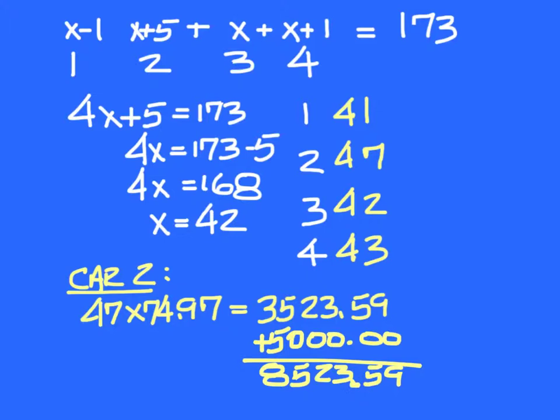We're going to add this up differently than the last two days, so pay attention to what you get a point for. If you have the expression for each one right, one point each, so you could earn 4 points there. If you have x equals 42, you get another point, so that's 5. If you have all of these, those are one point each—41, 47, 42, and 43, the total mileage for each one. That's a point each, so you're up to 9. And if you have this number here at the bottom, 85, 23, 59, that will be 10.